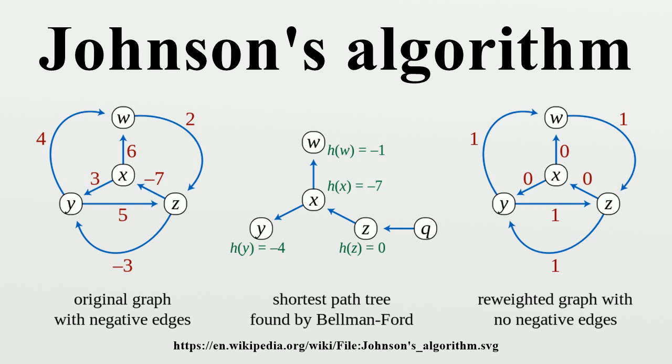On the right is shown the reweighted graph formed by replacing each edge weight W by W plus H(U) minus H(V). In this reweighted graph, all edge weights are non-negative, but the shortest path between any two nodes uses the same sequence of edges as the shortest path between the same two nodes in the original graph.